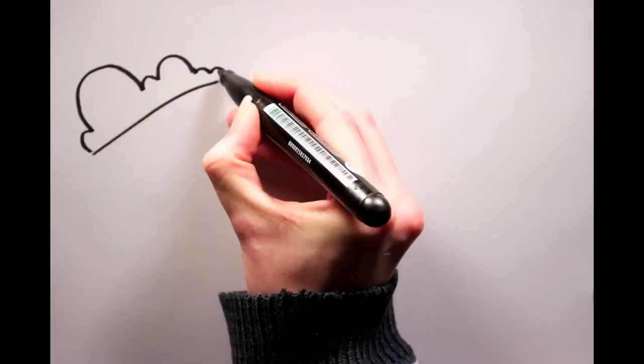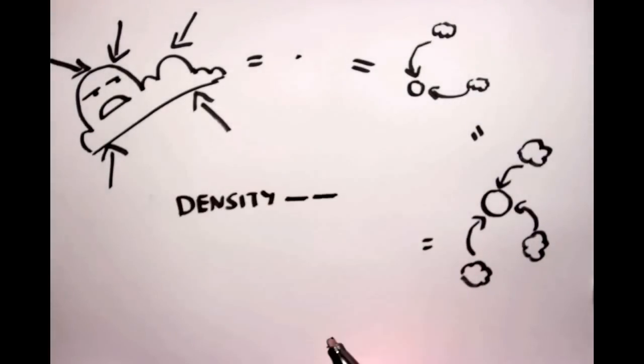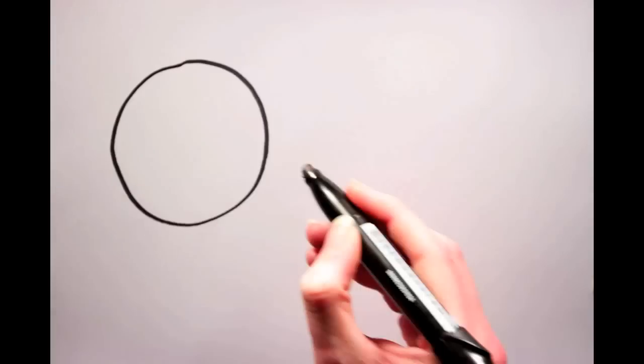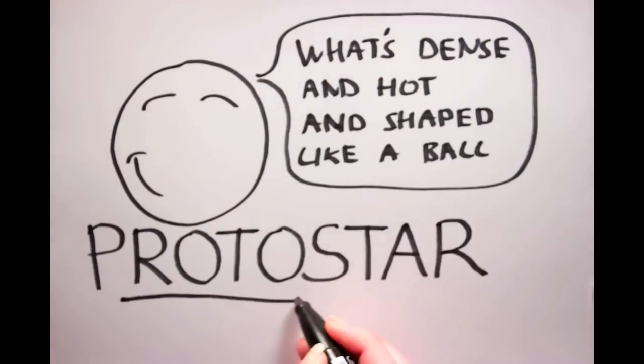Over time, gravity will cause the cloud to collapse in on itself and begin to form knots of matter. Due to Newton's law of universal gravitation, over time, more and more matter will clump together at these knots. As more matter collapses, the density increases, gravitational energy is converted into heat, and the temperature also increases. When the temperature is high enough, the now spherical gaseous clump will begin to dimly glow and a protostar is born.